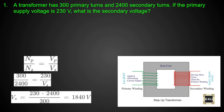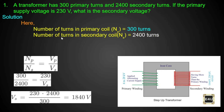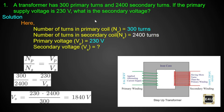Generally in transformer questions, 4 things are there — 3 things are given and 1 thing is unknown. The number of primary turns is 300, the number of secondary turns is 2400. The secondary voltage Vs is unknown. We take the principle of transformer: Np by Ns equals Vp by Vs.